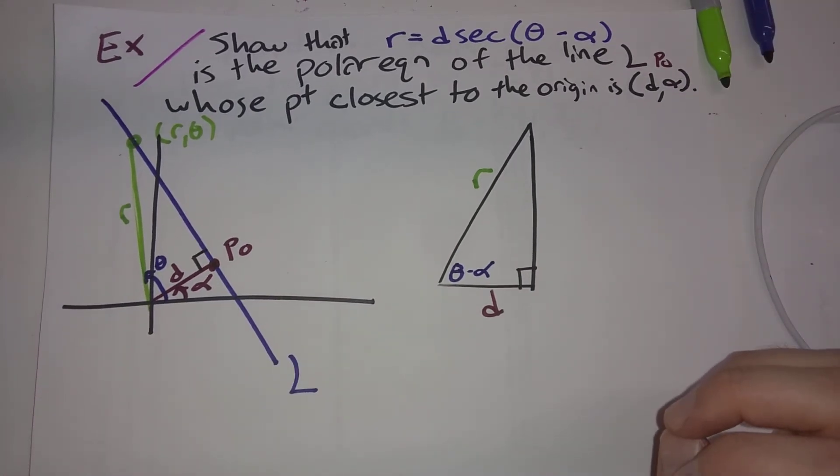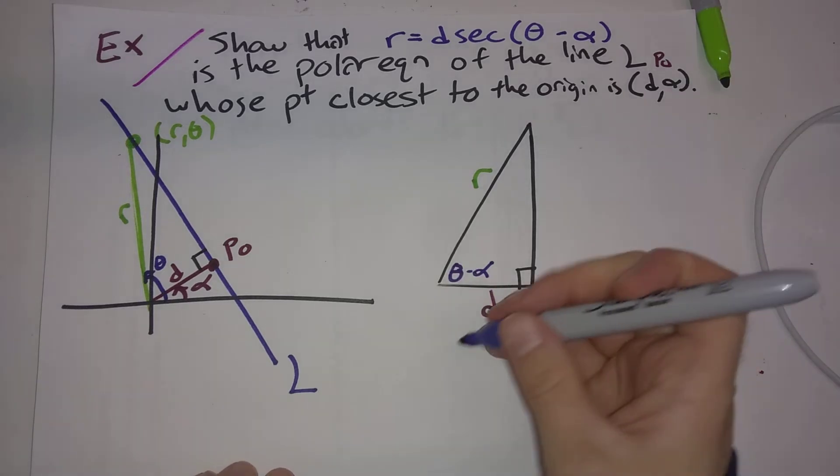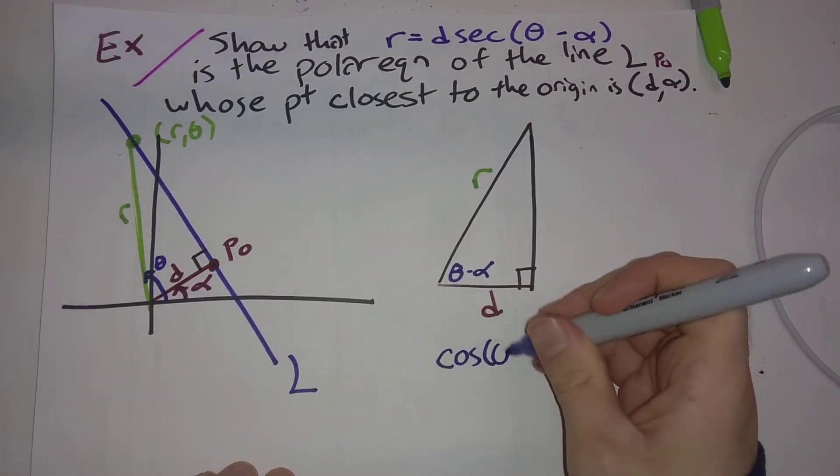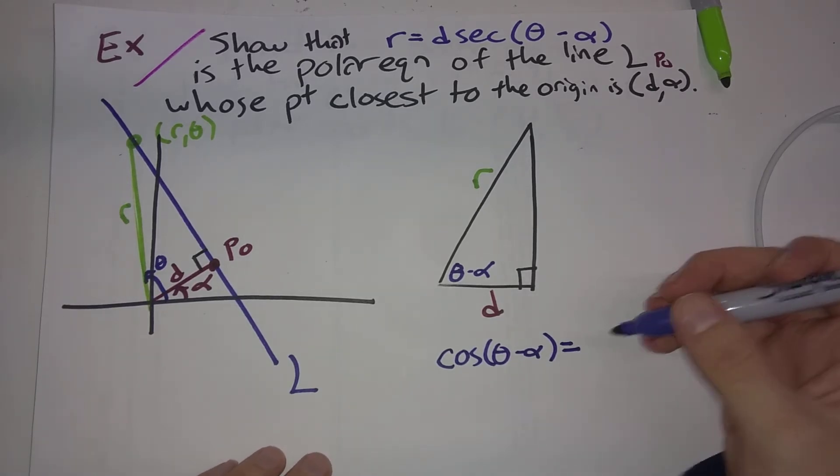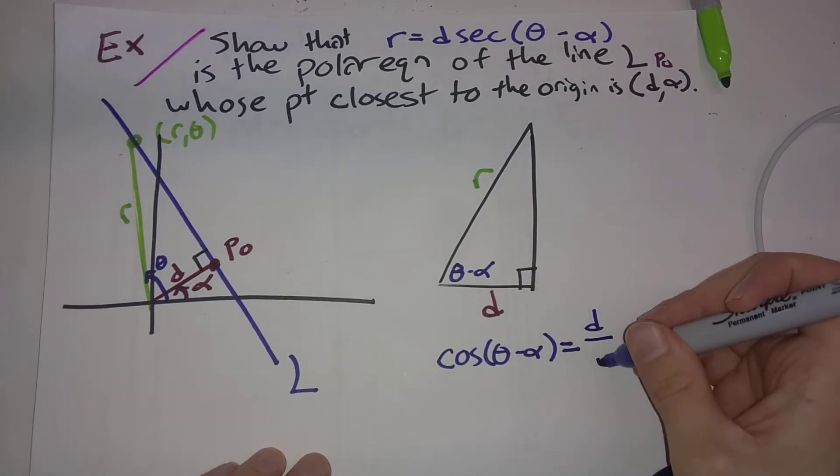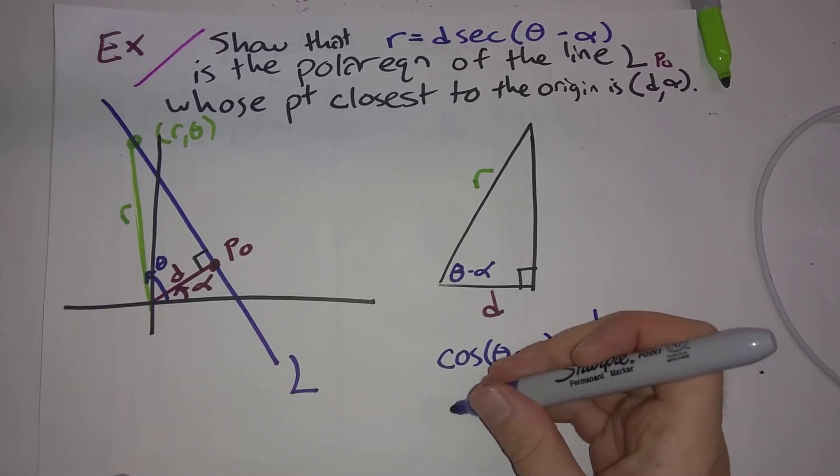And so we have a right triangle here. What can we conclude about this right triangle? What is the cosine of this angle? Cosine of theta minus alpha is equal to D divided by R. But if we take reciprocals here, one over cosine is secant.